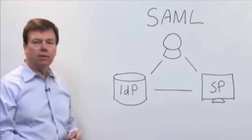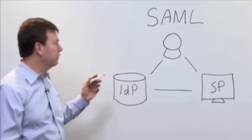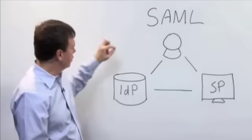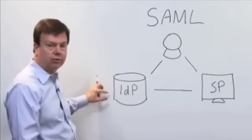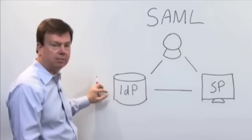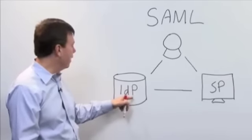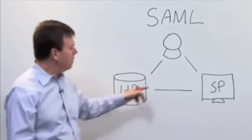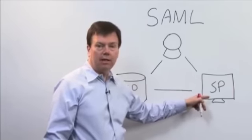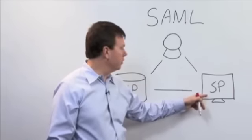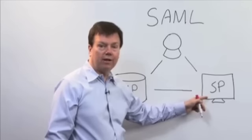So how does SAML work? There are three entities involved. There's a user. There's an organization that maintains a directory of users and an authentication mechanism, which is called the identity provider, or IDP. And then there is an organization that hosts the target application or service, which is called the service provider, or SP.